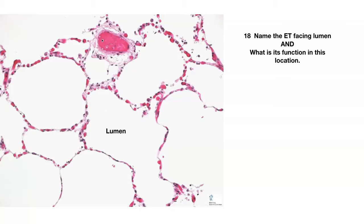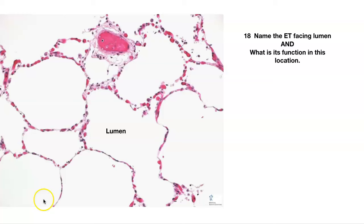Number eighteen — name the epithelial tissue facing the lumen. We've got lots of lumens here. You've already seen this in the big picture of the lungs. This epithelium is simple squamous. What is its function here? We're in the lungs, so we're going to have diffusion of gases — carbon dioxide and oxygen. This is diffusion of gases.